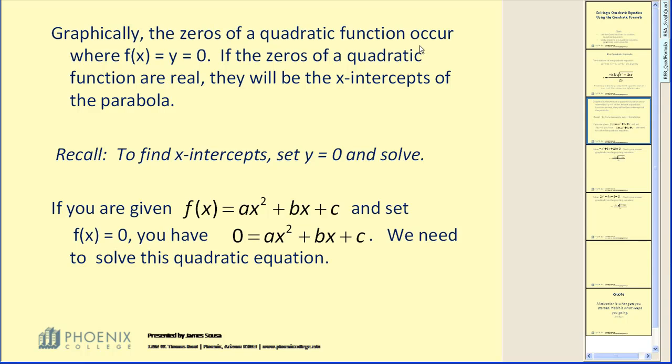Graphically, the zeros of a quadratic function occur where y or f of x is equal to 0. If the zeros of a quadratic function are real, they will be the x-intercepts of the parabola.